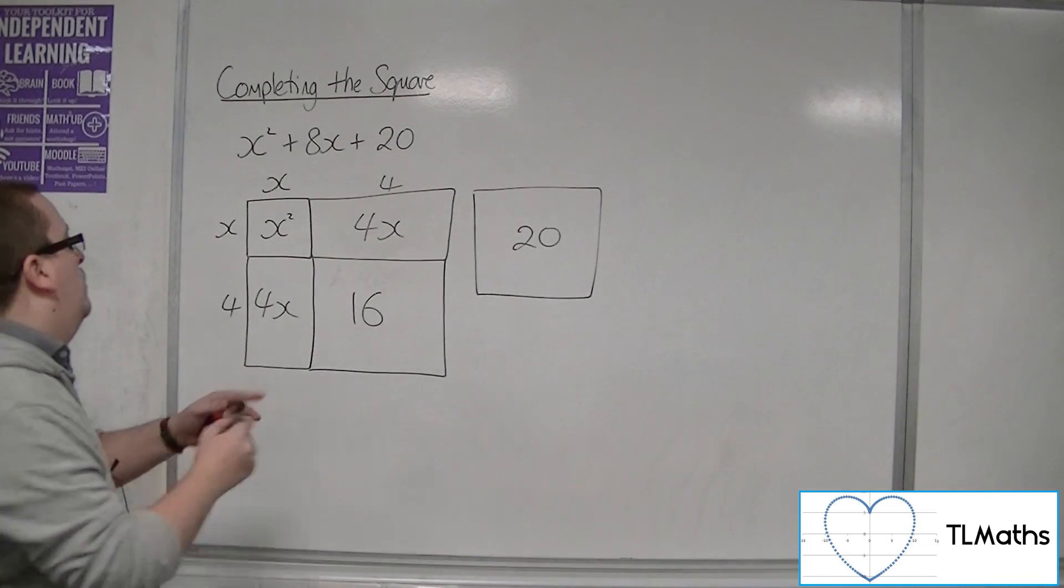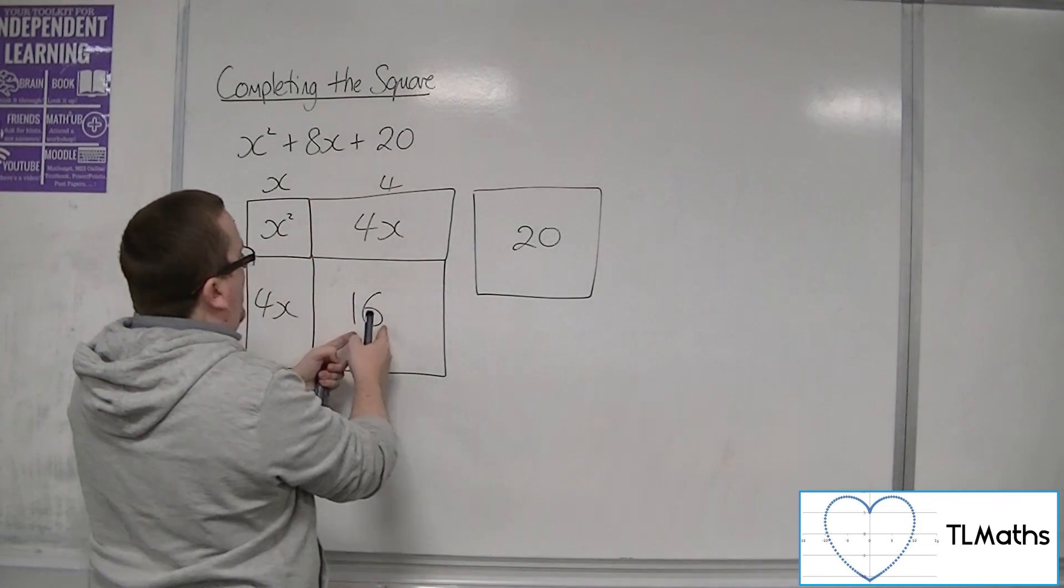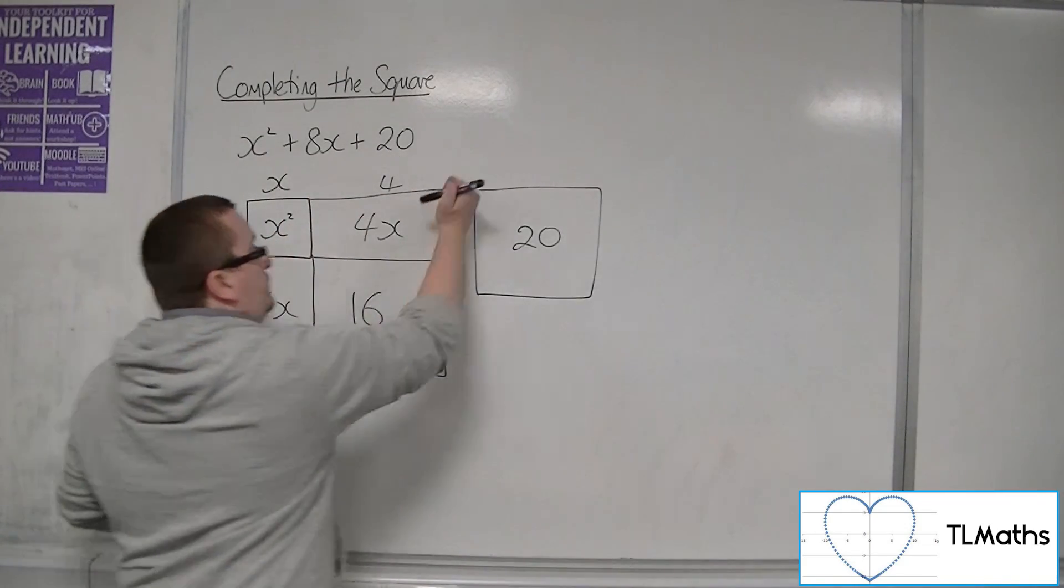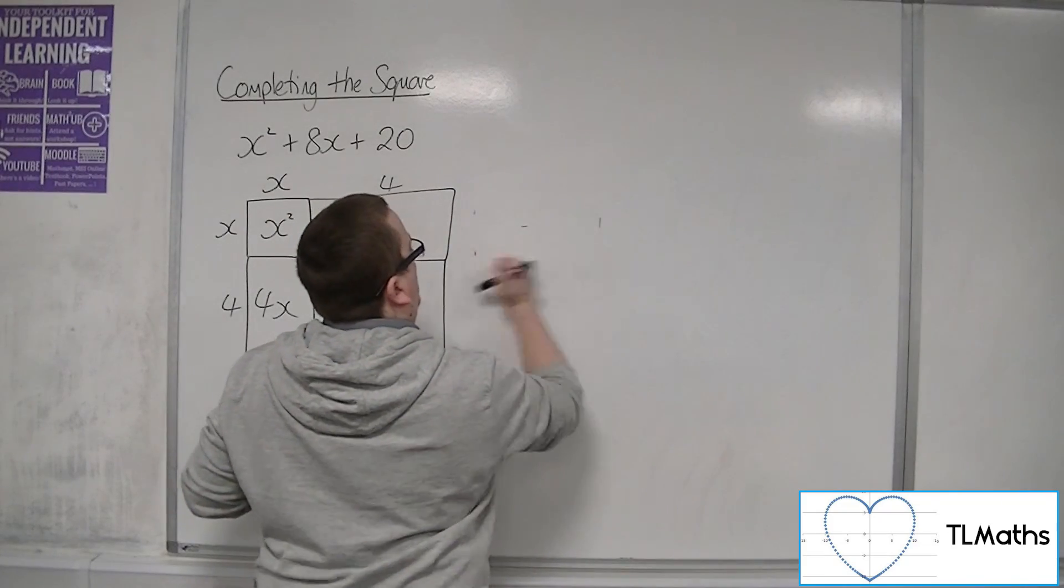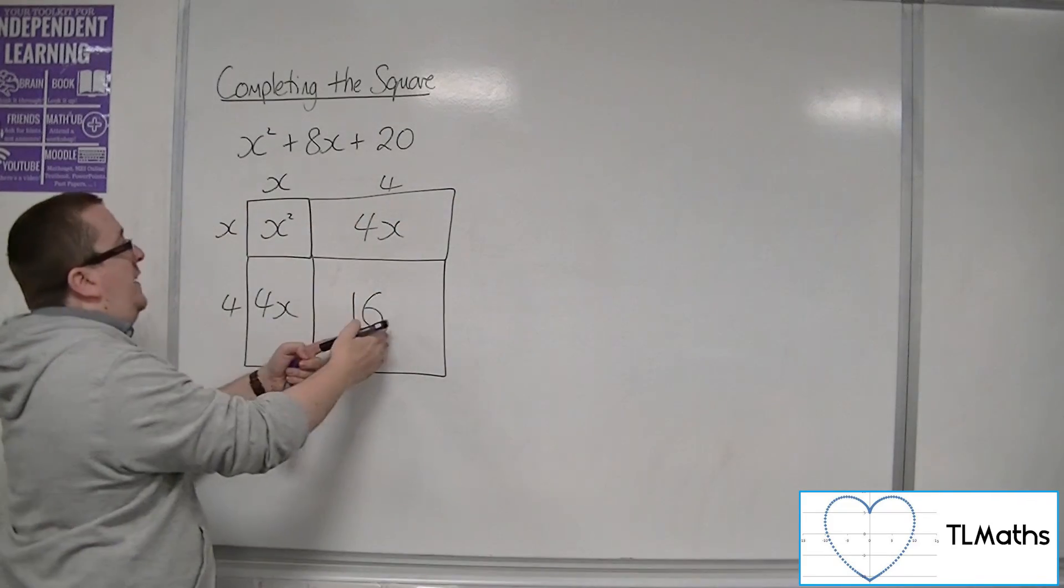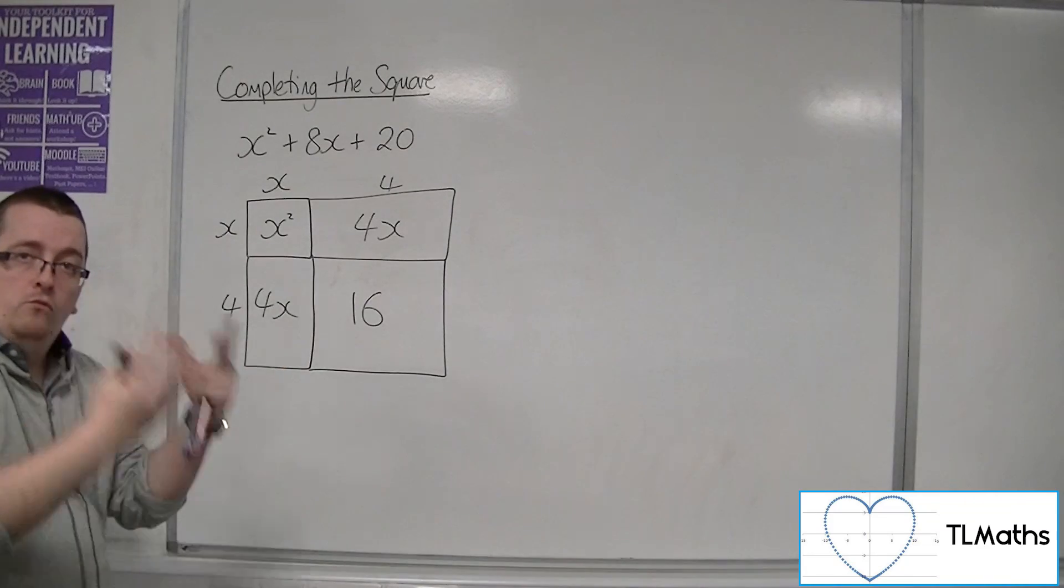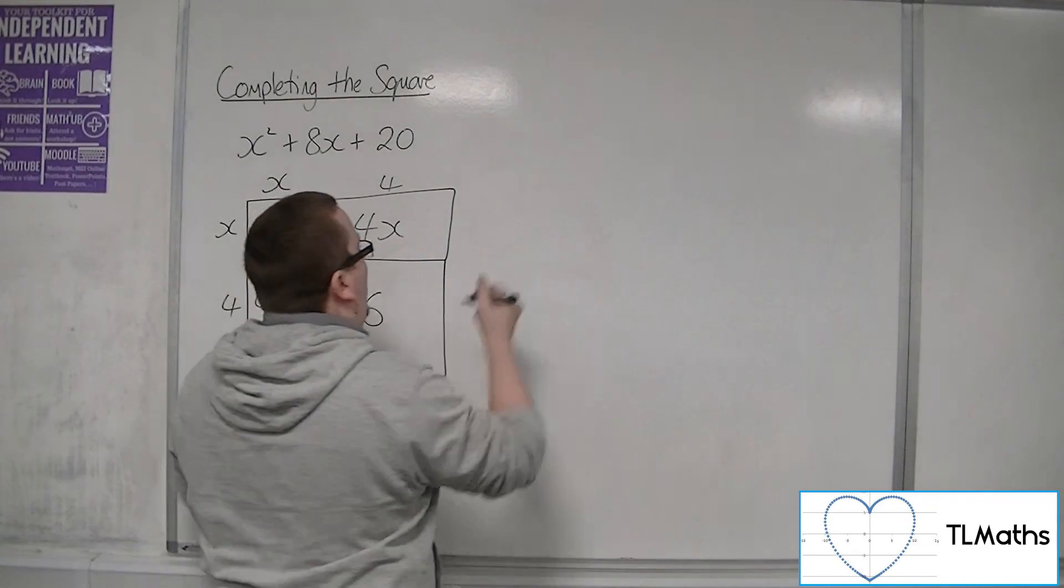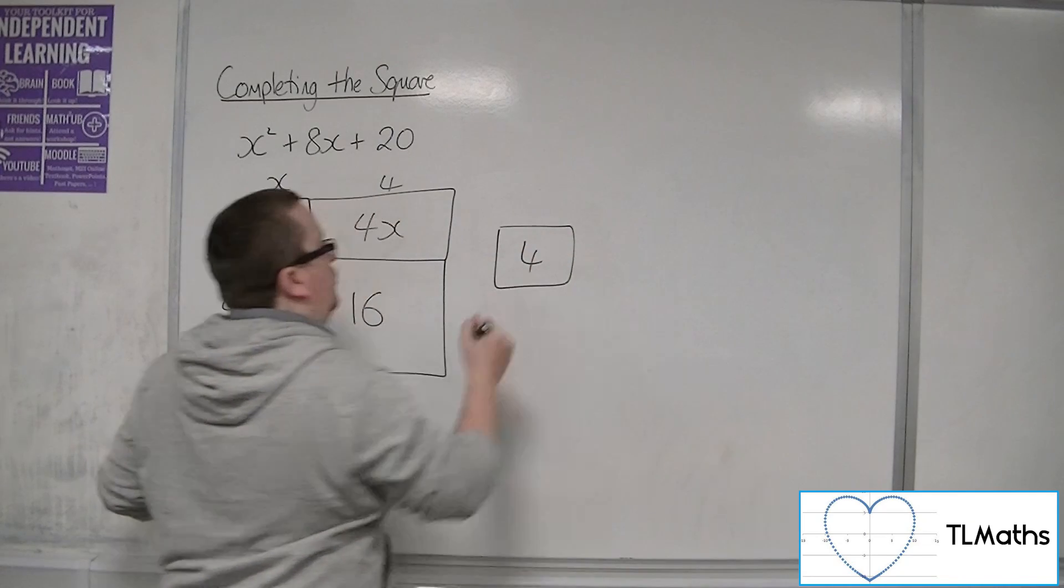And clearly what I've got here is I wanted 20. So I've got here 16. I've got 4 remainder that I've got to add on. So I've got this little block of 4.